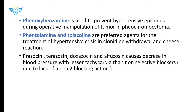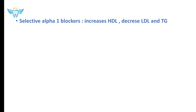Prazosin, terazosin, doxazosin, and alfuzosin cause a decrease in blood pressure with lesser tachycardia than non-selective blockers because they specifically act on alpha-1. Selective alpha-1 blockers increase HDL (high-density lipoprotein), which is good for the heart, and decrease LDL and triglycerides, which are harmful.